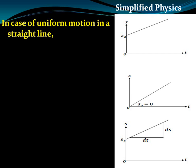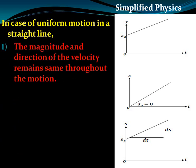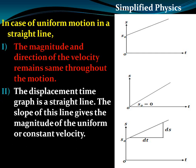In case of uniform motion, the displacement-time graph is a straight line. If at t equals zero there is a certain displacement, the graph may look like this. If there is no initial displacement, it is a straight line passing through the origin. The magnitude and direction of the velocity remain the same throughout the motion in uniform motion, and the displacement-time graph is a straight line.